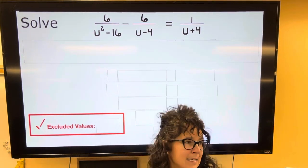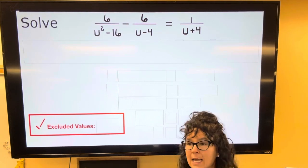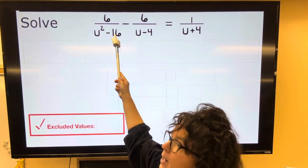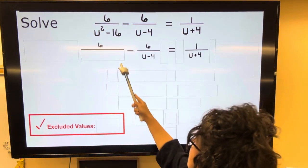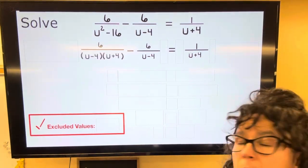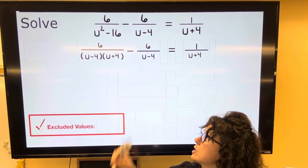U squared minus 16 is a perfect square. A squared minus B squared is A plus B times A minus B. So this is U times U minus 4 times 4. So that one is going to become U plus 4 multiplied by U minus 4. So I have my U minus 4 times U plus 4.